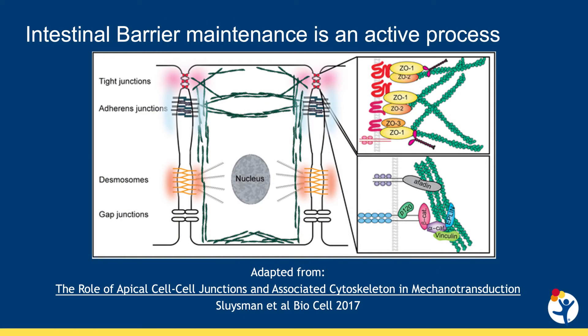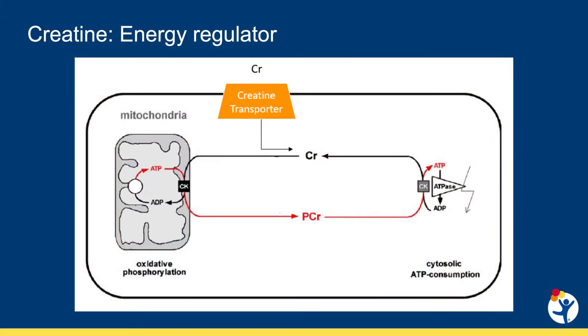The intestines must maintain a semi-permeable barrier in order to exclude inflammatory factors such as bacteria and food antigens from leaking into the body, while still being able to absorb nutrients and water. This involves a tightly controlled process of regulation of the protein composition of tight junctions and adherence junctions. The junctional proteins are stabilized by the actin cytoskeleton. Maintenance of the epithelial cellular junctions is an energy dependent process. Within cells, energy distribution is mediated in part by the creatine cycle.